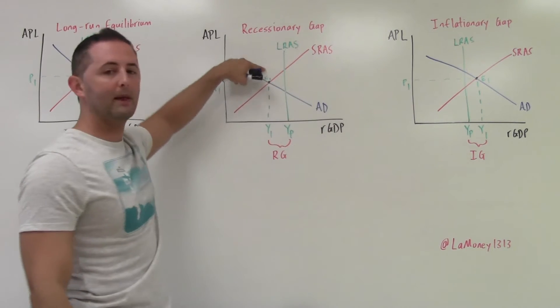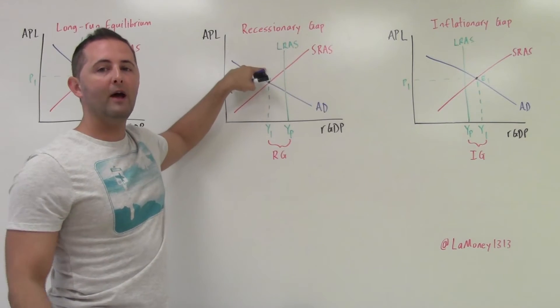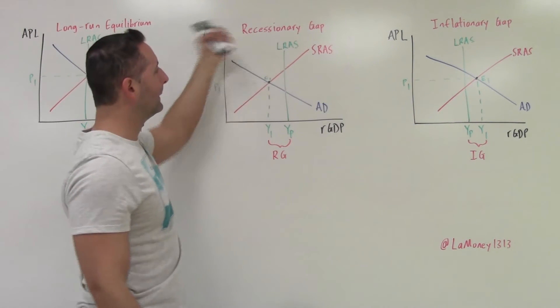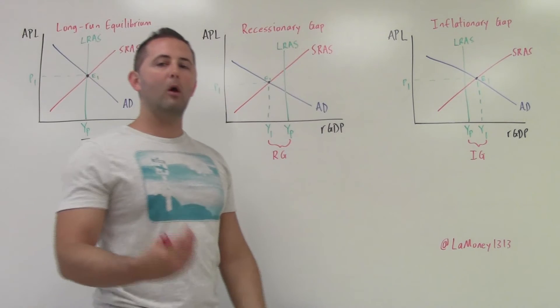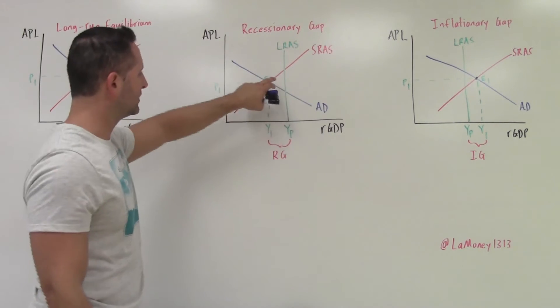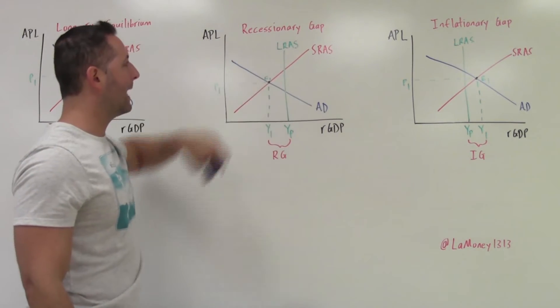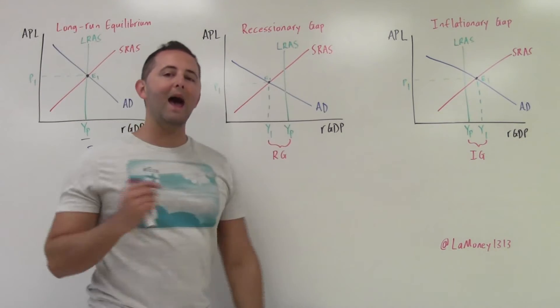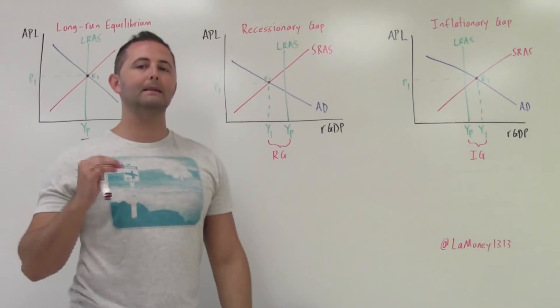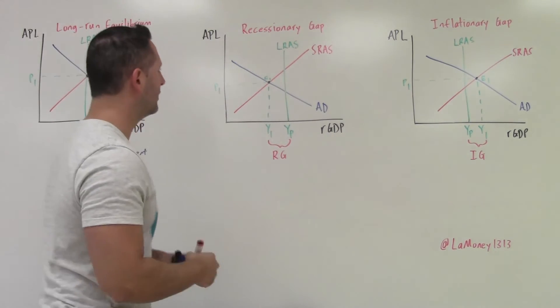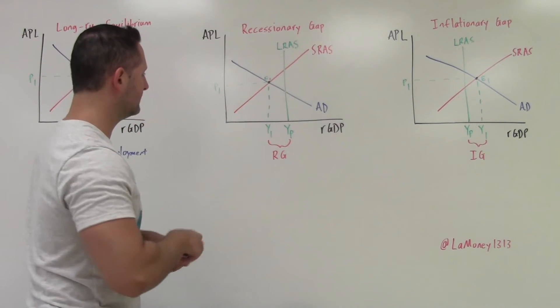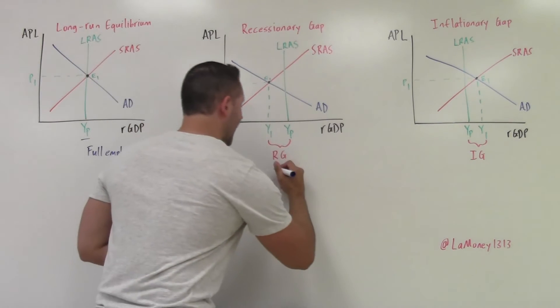We have our LRAS curve. We have our SRAS, aggregate demand. What we notice is that the short-run aggregate supply curve and the aggregate demand curve, that they are intercepting to the left of the long-run aggregate supply curve.